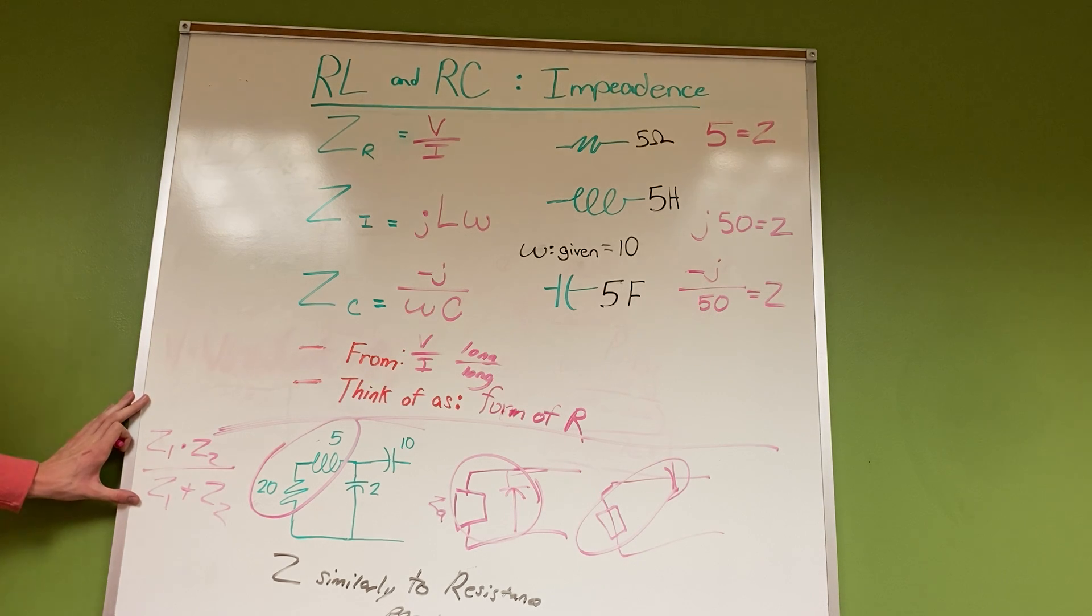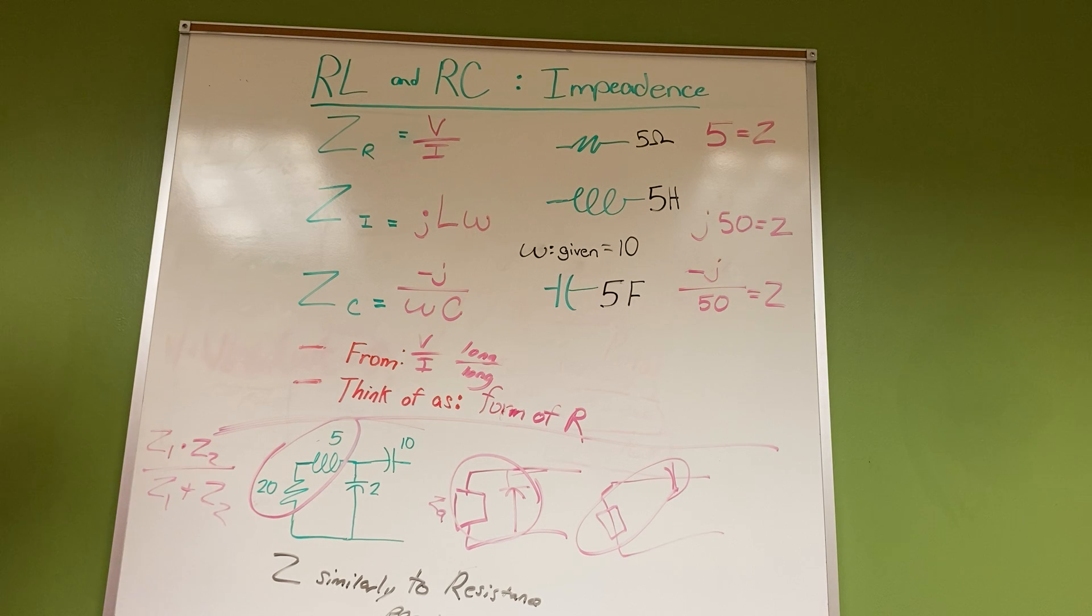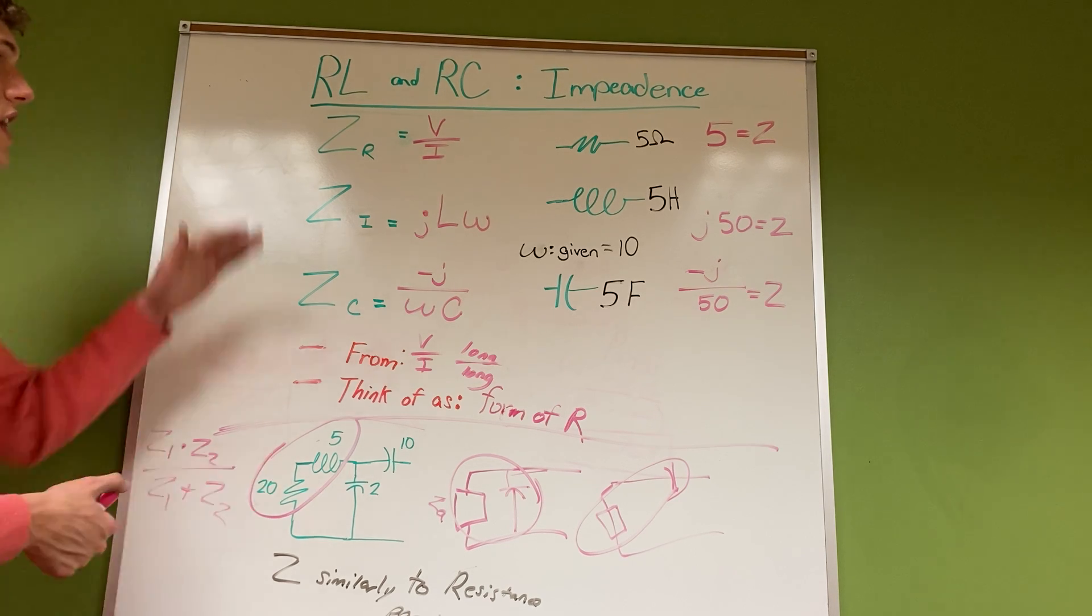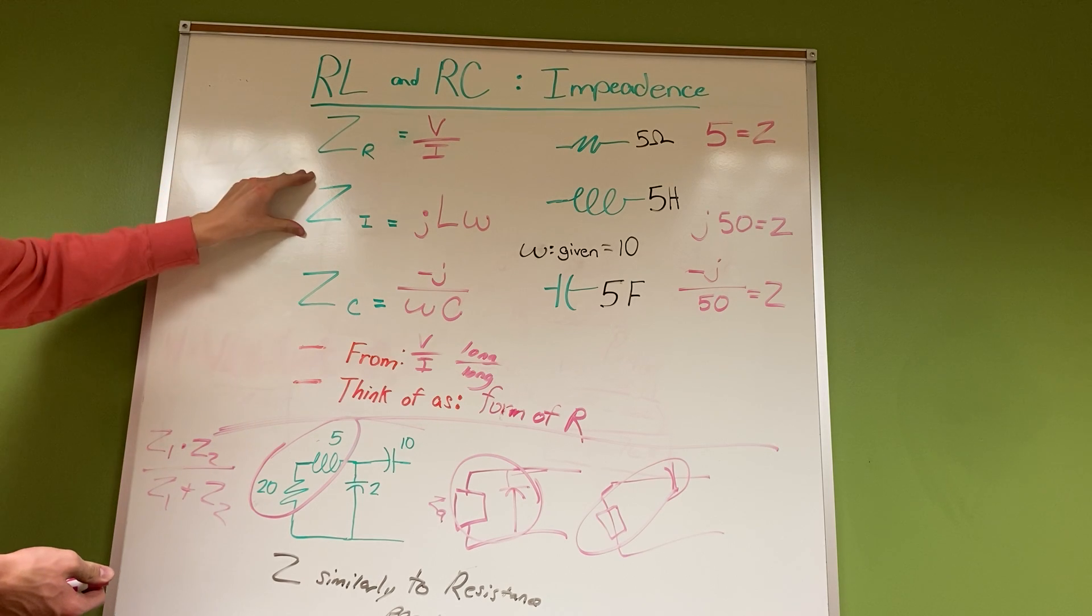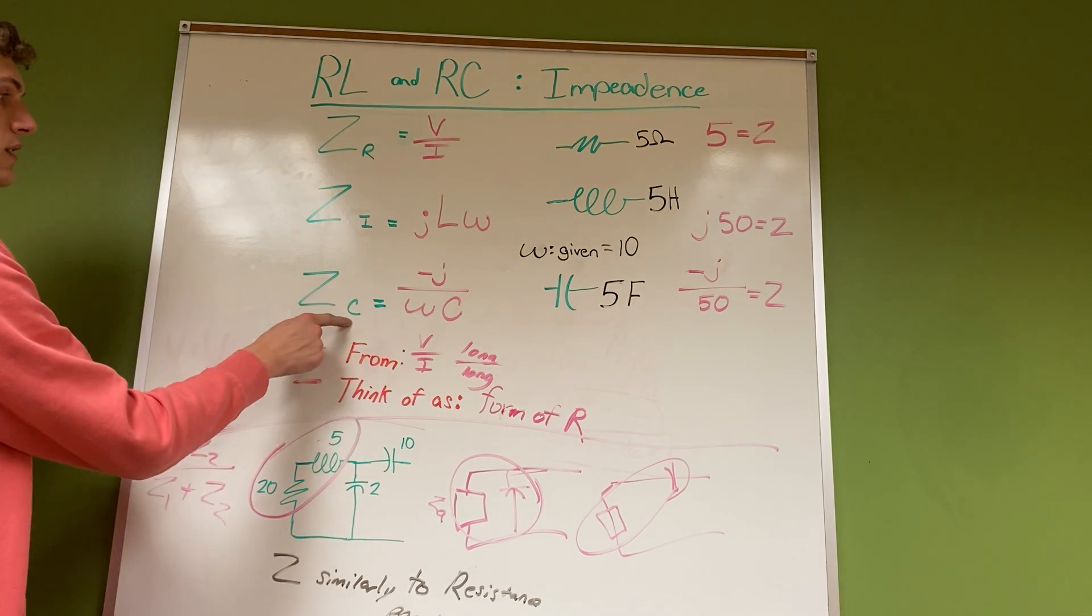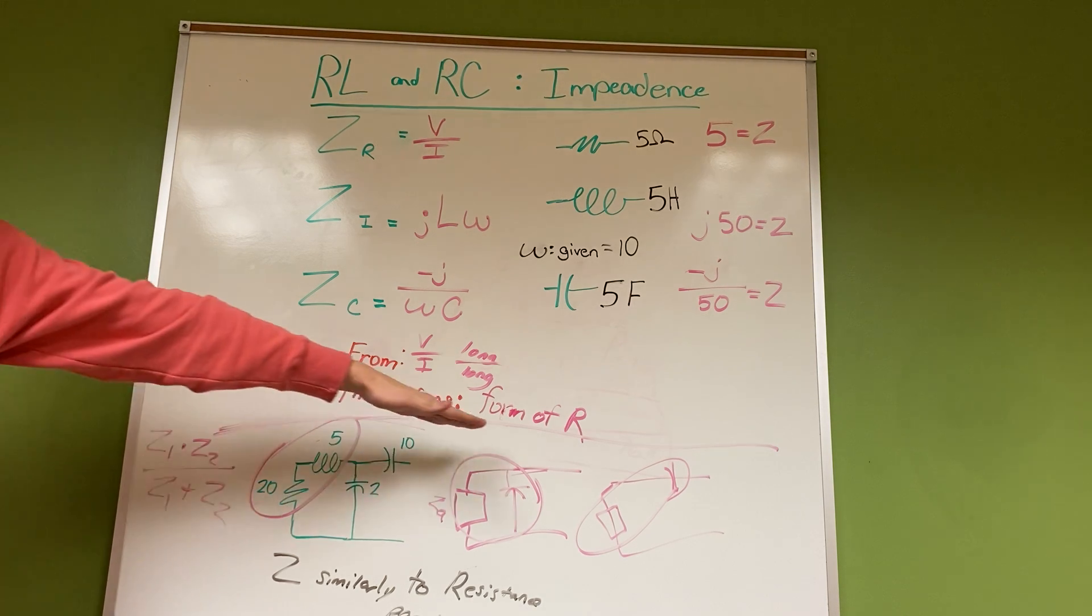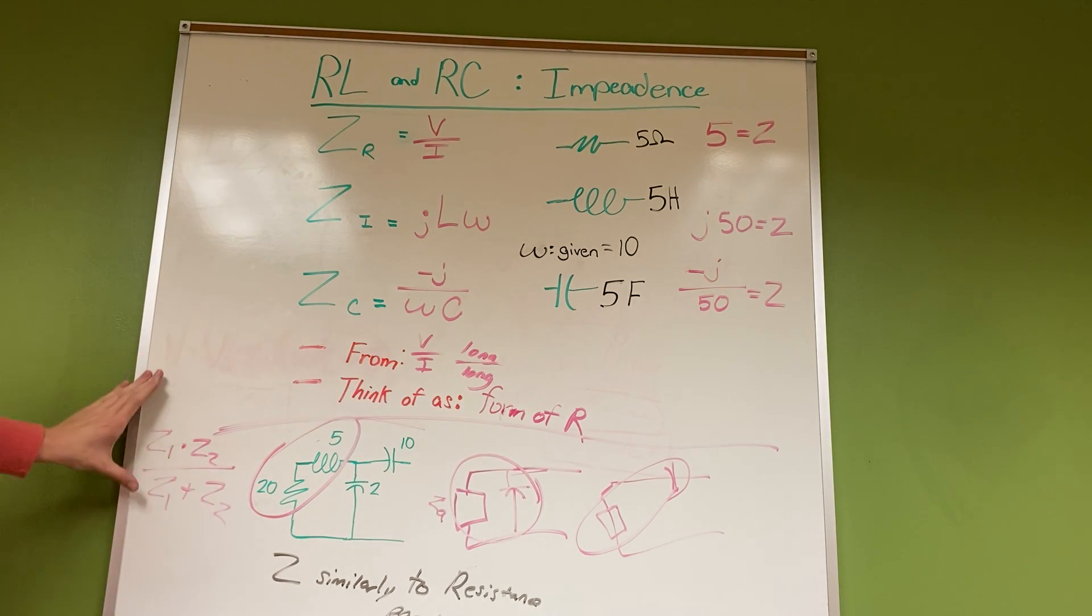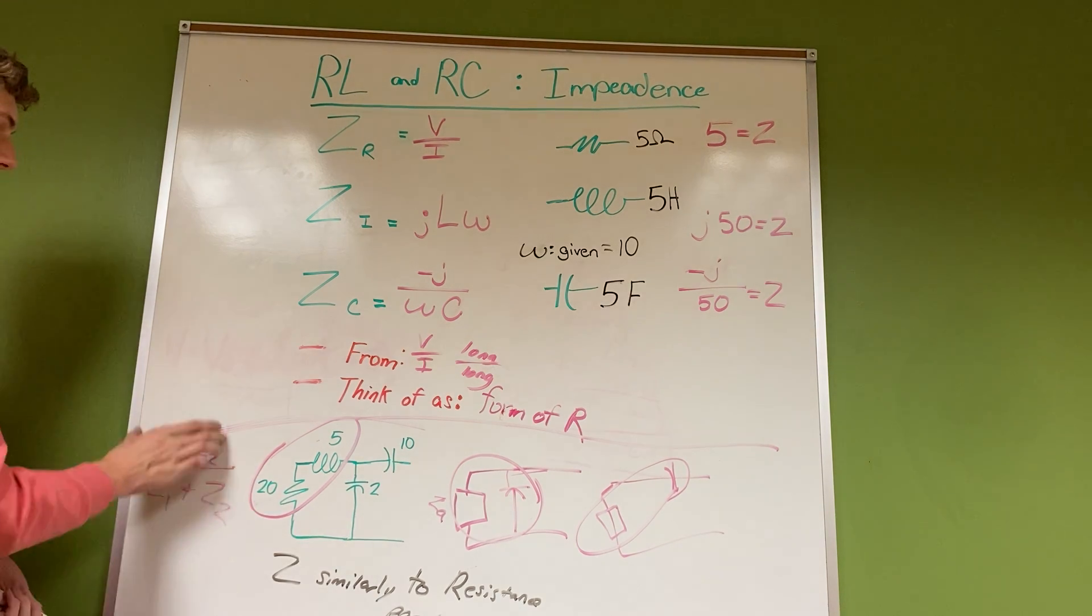We can do the same thing for impedance. In conclusion, impedance varies from resistance. These are the three equations that you need to know - they apply to C, L, or R. Think of them as a form of resistance, and then we apply them in series or in parallel the same way that we would with resistance, through this parallel equation or by adding them.